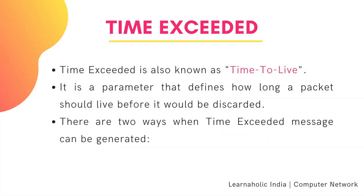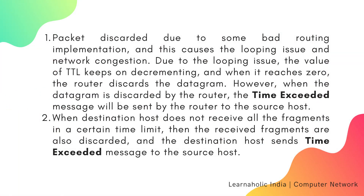The next error type is time exceeded, also known as time to live. It is a parameter that defines how long a packet should live before it would be discarded. There are two ways when a time exceeded message can be generated. First, sometimes a packet is discarded due to bad routing implementation, causing a looping issue and network congestion. Due to the looping issue, the value of TTL keeps decrementing, and when it reaches zero, the router discards the datagram. When the datagram is discarded by the router, the time exceeded message is sent by the router to the source host.